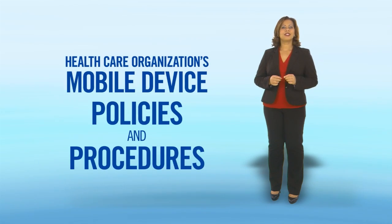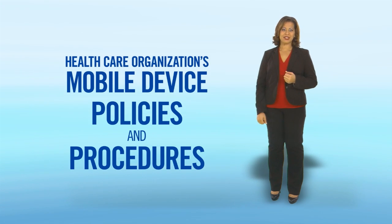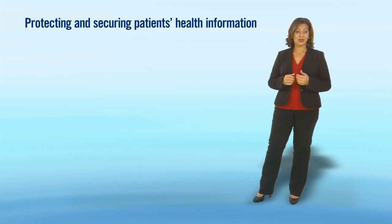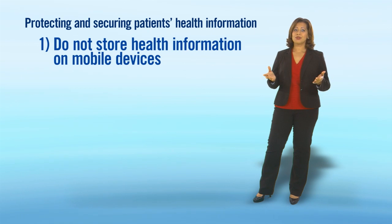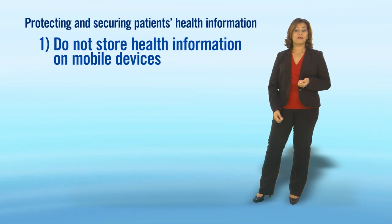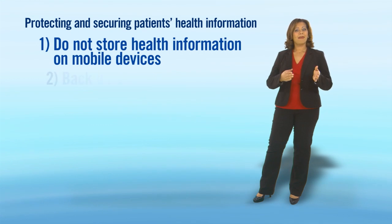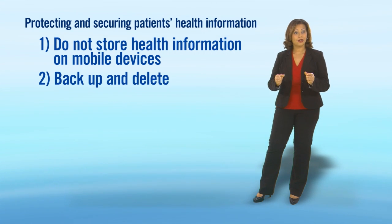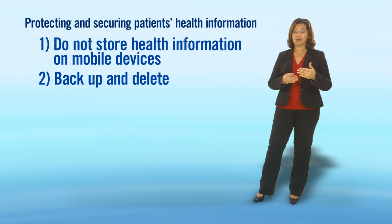This means you must protect and secure patient's PHI no matter what kind of technology you're using. It is important to understand and follow your organization's mobile device policies and procedures. You should also know who the office or organization's privacy and security officials are in case your device is lost or stolen. The easiest way to protect and secure health information? Don't store it on mobile devices. However, if you store health information on your mobile device, back the data up to a secure server on a regular basis and delete the data from the device after you review it.